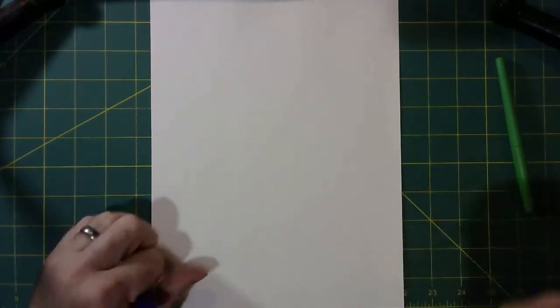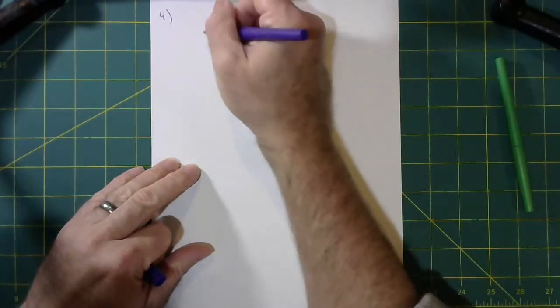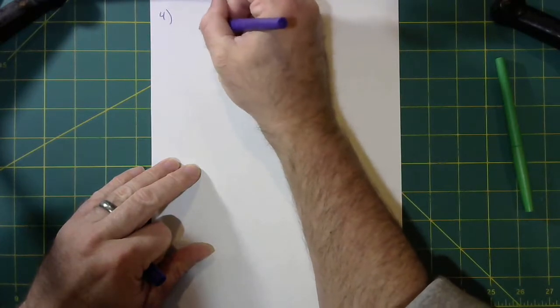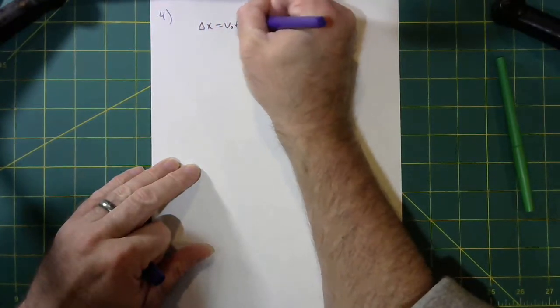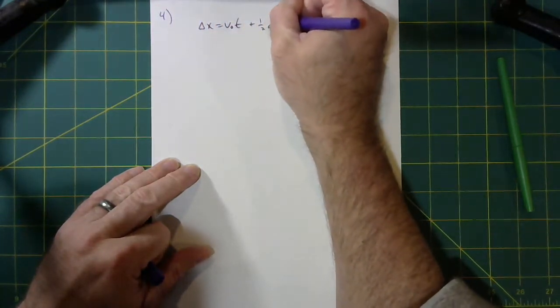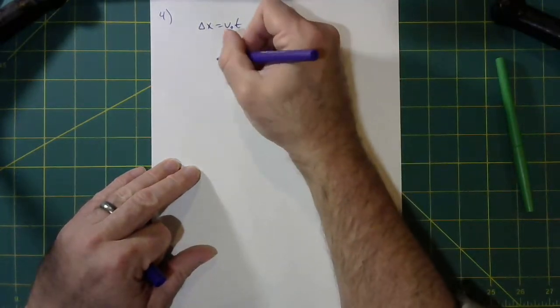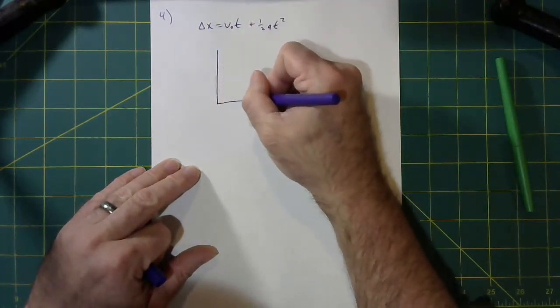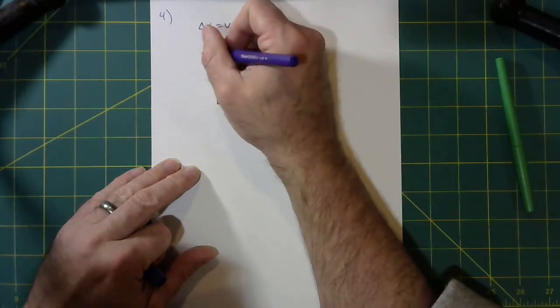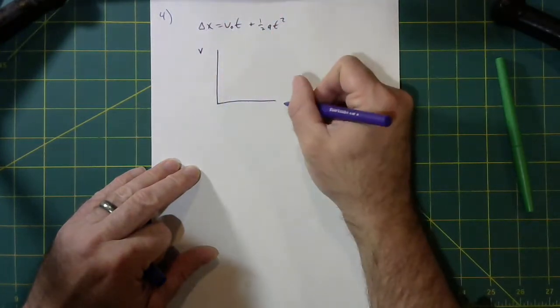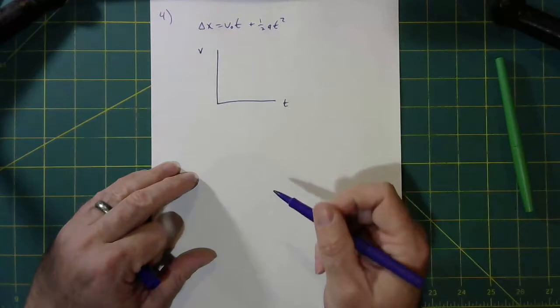You may recall that when I'm talking about this formula, think about, consider this graph: a velocity versus time graph. And perhaps we have something that is accelerating with a nice constant acceleration.